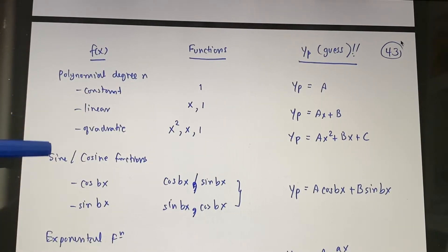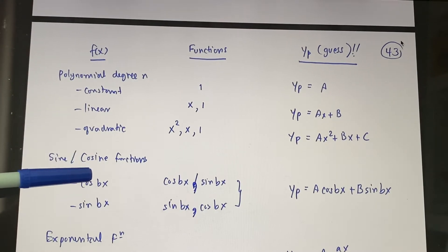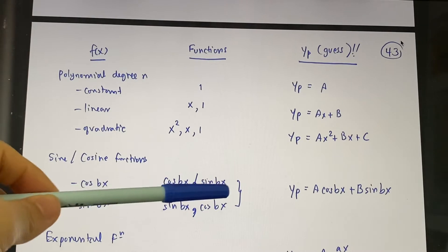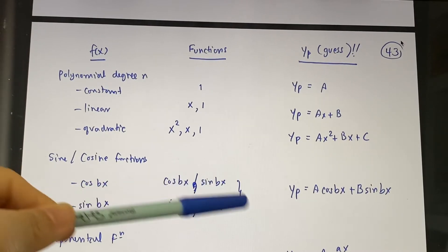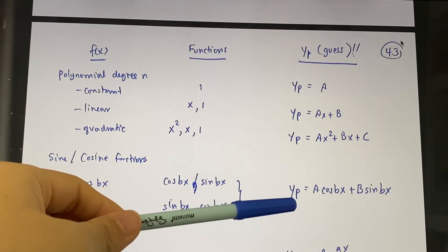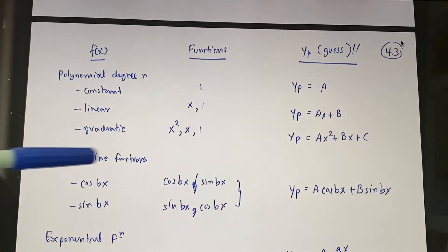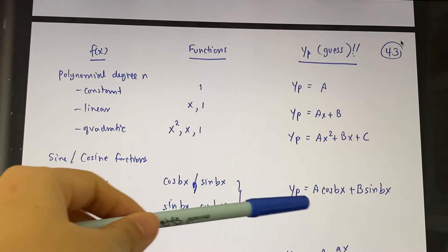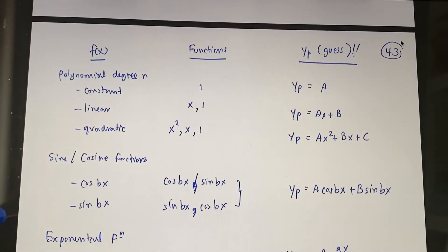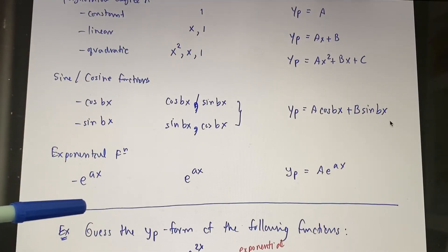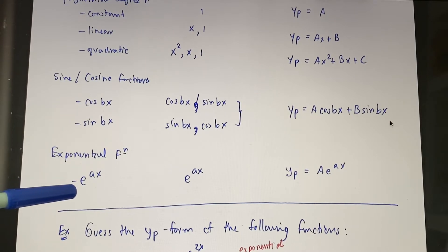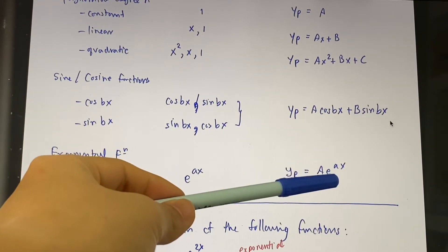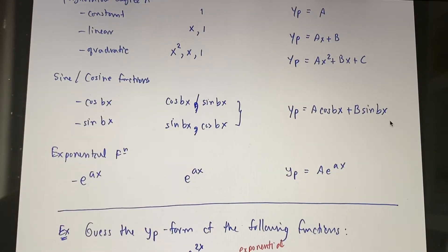If f(x) involves a cosine or sine function — it can be sine or cosine of bx, or a combination — there is only one way to guess yp: set it equal to A·cos(bx) + B·sin(bx). For example, if f(x) = cos(2x), you still set yp = A·cos(2x) + B·sin(2x). If f(x) is exponential e^(ax), then yp equals a constant times e^(ax).